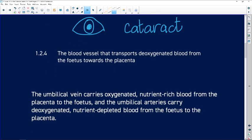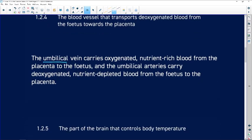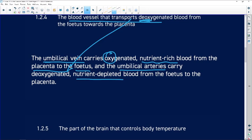The blood vessel that transports deoxygenated blood from the fetus towards the placenta. And that is going to be our umbilical vein. Oh sorry, the blood vessel that transports deoxygenated blood. The umbilical vein carries oxygenated blood, nutrient-rich blood from placenta to fetus. And the umbilical arteries carry deoxygenated, nutrient-depleted blood from the fetus back to the placenta. So we're looking here at the answer, umbilical arteries.